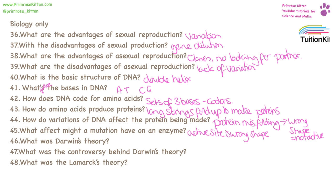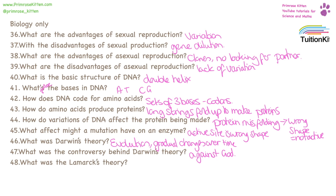Darwin came up with the theory of evolution — gradual changes over time — and this was controversial because it went against God. Lamarck's theory was that characteristics developed during a lifetime were passed on to the offspring.